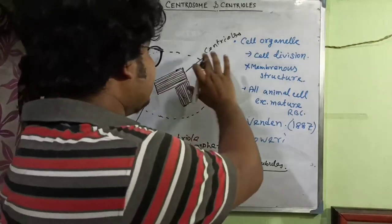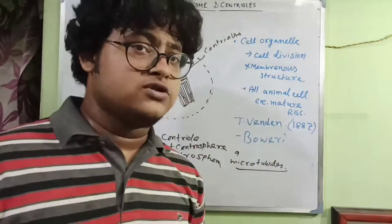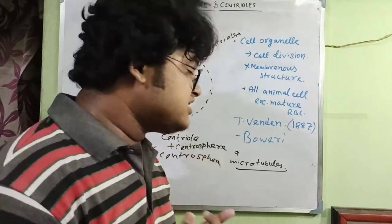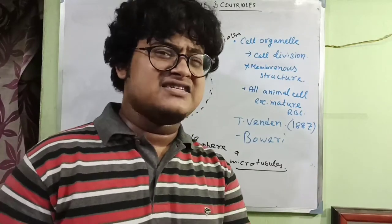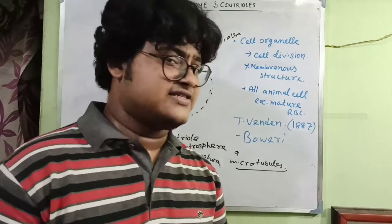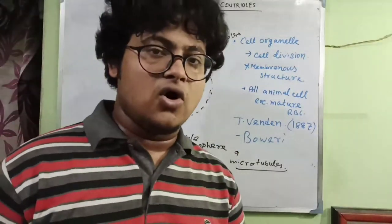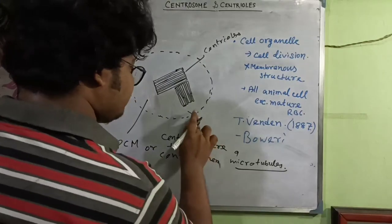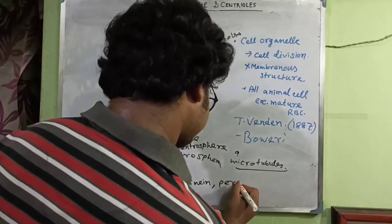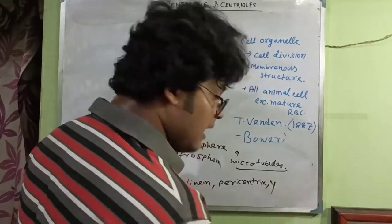The centriole consists of nine microtubular structures. Microtubules are cytoskeletal structures made up of tubulin proteins. In eukaryotic cells there are alpha tubulin, beta tubulin, and gamma tubulin. The pericentriolar matrix is a dense region consisting of three proteins: ninein, pericentrin, and gamma tubulin.